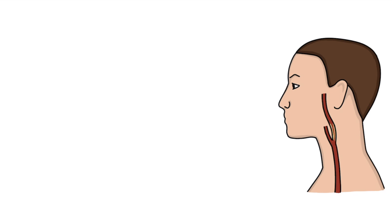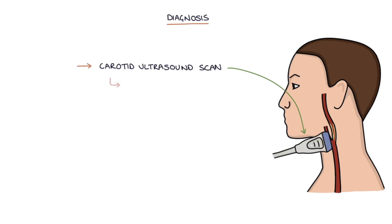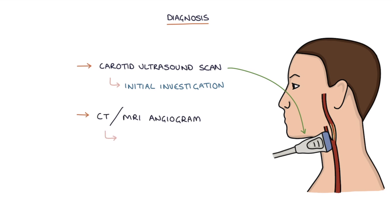A carotid ultrasound scan is usually the initial investigation to diagnose and assess carotid artery stenosis. A CT or MRI angiogram may be used to assess the stenosis in more detail before surgical interventions.